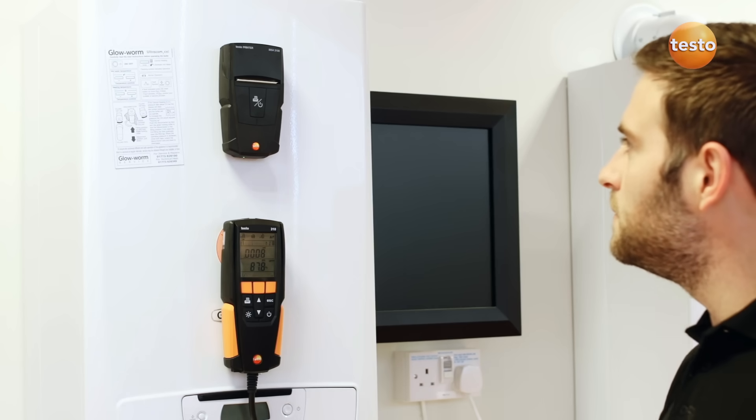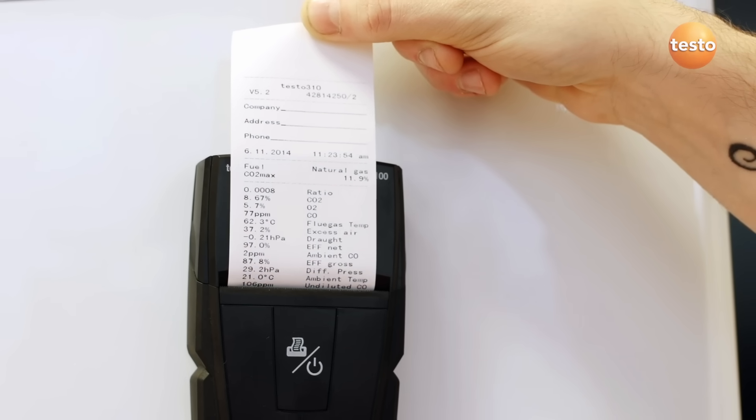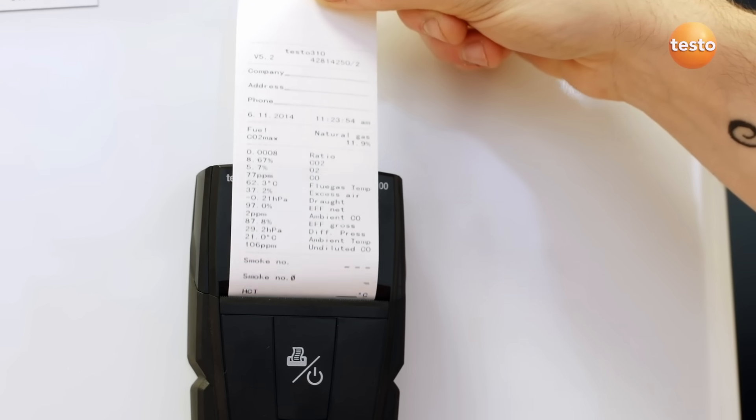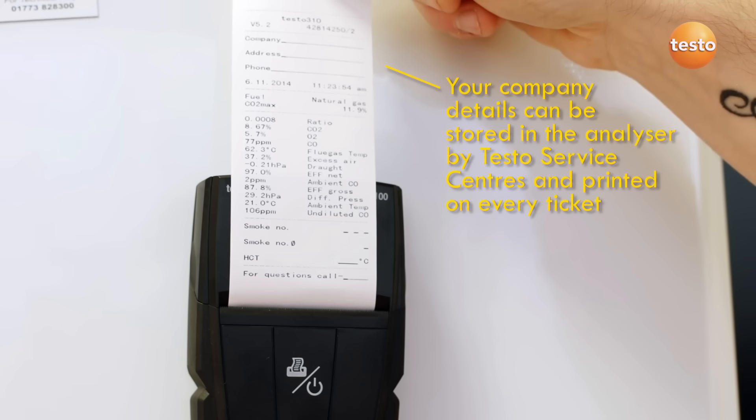To print the measurements, align the infrared printer with the analyzer and press the print button. All of the measurement results will be printed out, together with the serial number of the analyzer, the time and date, and any company details you may have set on the analyzer.